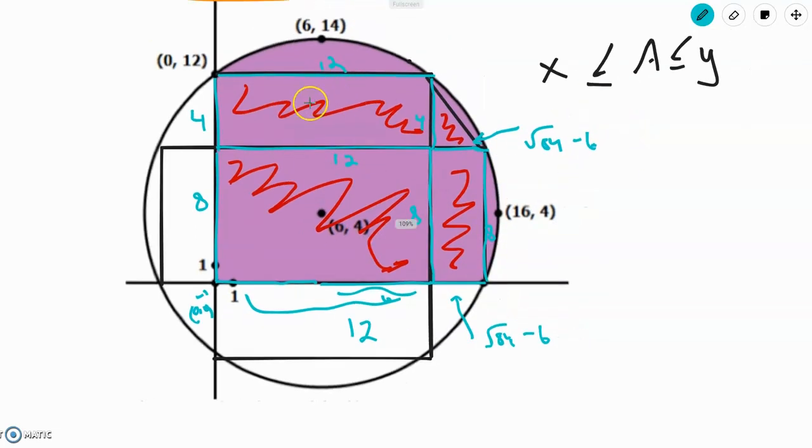So the area of the three rectangles is equal to 12 times 8, which is this. Plus, this is 96. 12 times 4, 48.